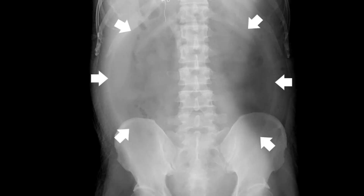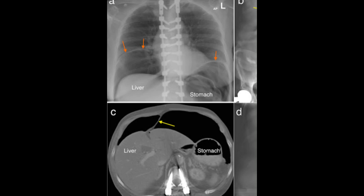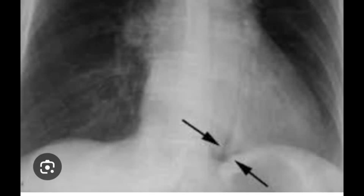Pneumoperitoneum can also be identified by peritoneal ligament signs. On the abdominal radiograph, the football sign indicated by the white arrow is pathognomonic for pneumoperitoneum and is caused by the peritoneal ligament sign. The falciform ligament sign can be seen on chest X-ray and CT abdomen — the red arrows indicate it on chest X-ray, and the yellow arrow on CT abdomen.